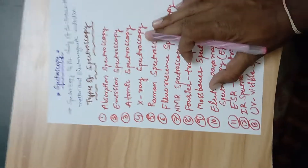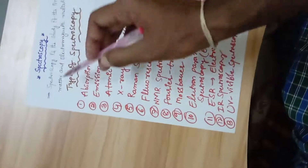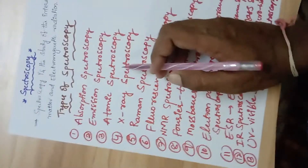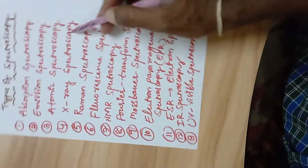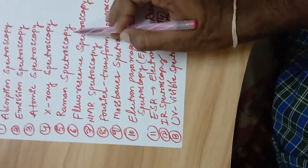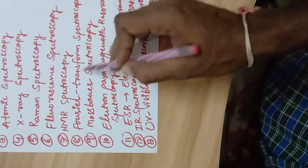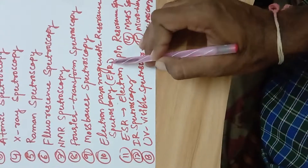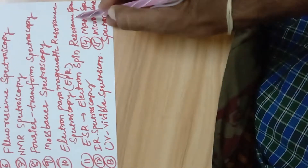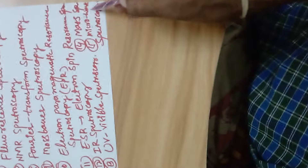Next, what is spectroscopy? Spectroscopy is the study of the interaction between matter and electromagnetic radiation. There are various types of spectroscopy: absorption spectroscopy, emission spectroscopy, atomic spectroscopy, X-ray spectroscopy, Raman spectroscopy, fluorescence spectroscopy, NMR spectroscopy (nuclear magnetic resonance), Fourier transform spectroscopy, mass spectroscopy, electron paramagnetic resonance spectroscopy (EPR), electron spin resonance spectroscopy (ESR), infrared spectroscopy, UV-visible spectroscopy, and microwave spectroscopy.